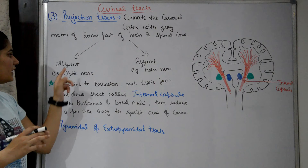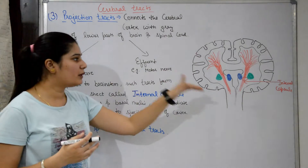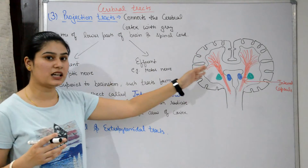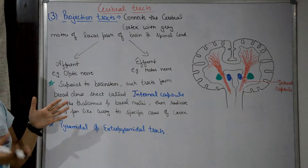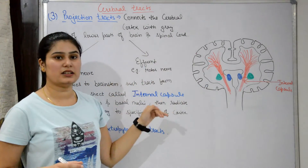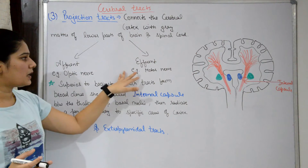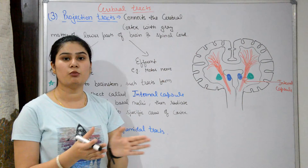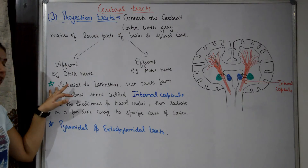Afferent projection tracks carry information to the cerebral cortex — examples include the optic nerve or the vestibulocochlear nerve. Efferent projection tracks carry information from the brain to the body parts — an example is the motor nerve, which comes from the brain and goes to specific motor organs like our skeletal muscles.